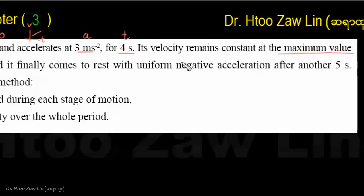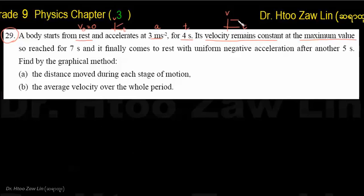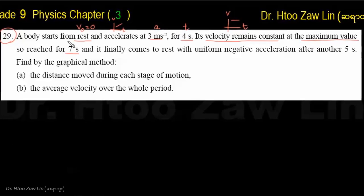The velocity remains constant at the measurement value. In this phase, velocity is constant — this is uniform motion. This corresponds to the section of the VT graph where velocity stays flat, lasting up to around seven seconds.